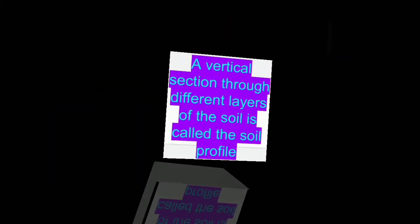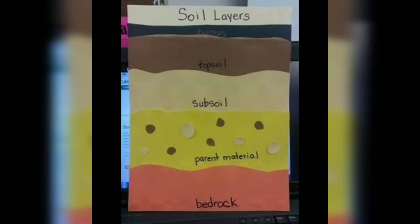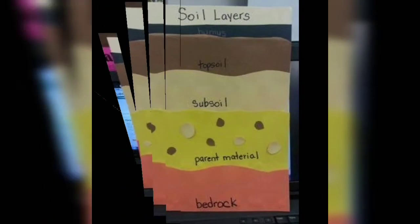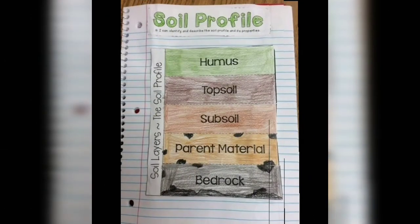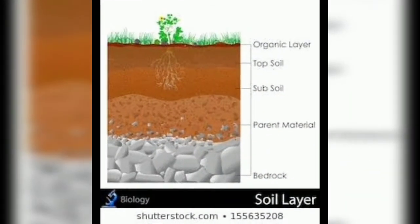A vertical section through different layers of the soil is called the soil profile. Each layer differs in feel, color, depth and chemical composition. These layers are referred to as horizons.